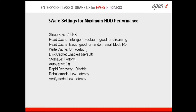Now let's take a look at the 3Ware settings for maximum hard drive performance. For the 3Ware, they recommend these settings for all supported RAID levels on the 9690, 9550, and newer models. They recommend a stripe size of 256 KB. The read cache should be set to Intelligent for streaming — this is their default value, and we'll show this as well.